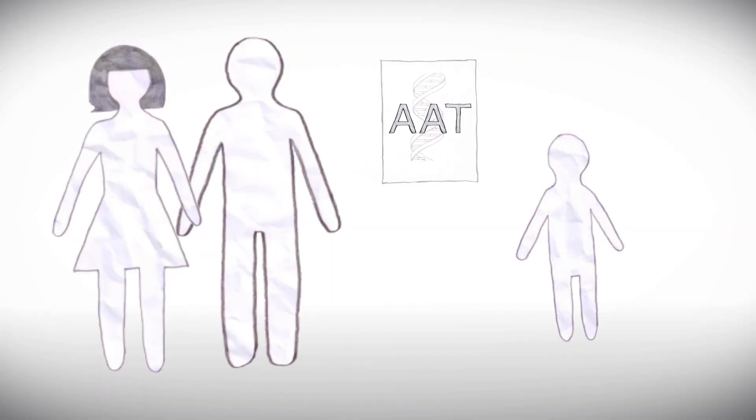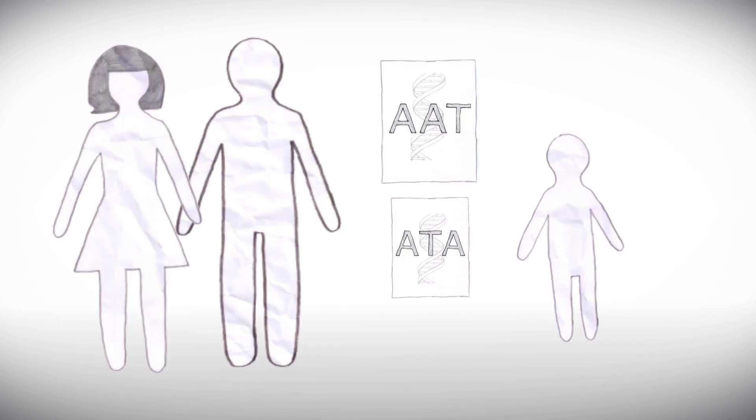That's because when a mom and a dad have a baby, their chromosomes are copied and passed on to their child, but not in a straightforward way. Instead, mom and dad's chromosomes are shuffled when they're passed on to their kids.